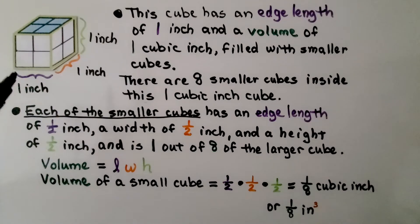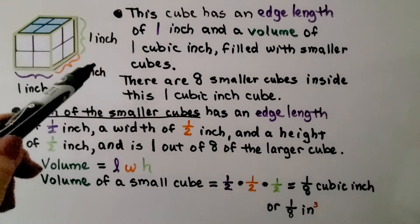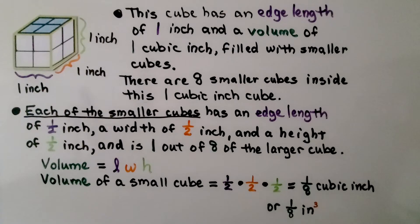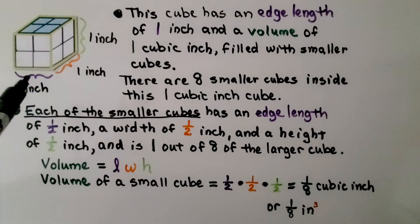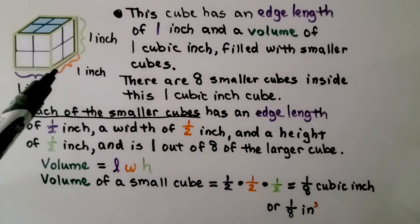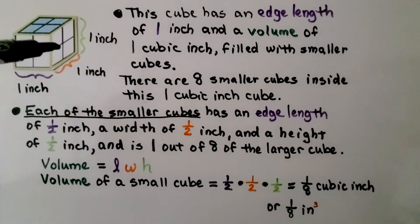This cube has an edge length of 1 inch and a volume of 1 cubic inch. Its length is 1 inch, width is 1 inch, and height is 1 inch — 1 times 1 times 1. It's a 1 inch cube, 1 cubic inch. We can see it's filled with smaller cubes. There are 8 smaller cubes inside this 1 cubic inch cube. Each smaller cube has an edge length of 1/2 inch. The width and height of one of these little cubes would also be 1/2 inch.